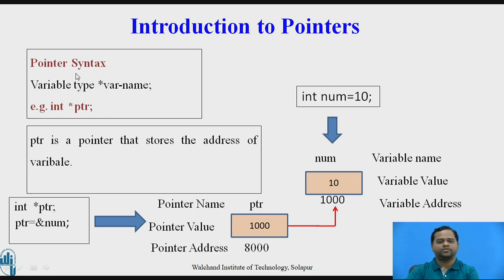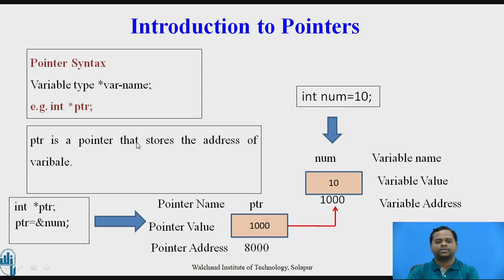The syntax of a pointer is: variable_type star variable_name semicolon. For example, if you are trying to declare an integer pointer, the syntax is int star ptr. Here ptr is the variable name and int is the variable type. So ptr is the pointer that stores the address of an integer variable.